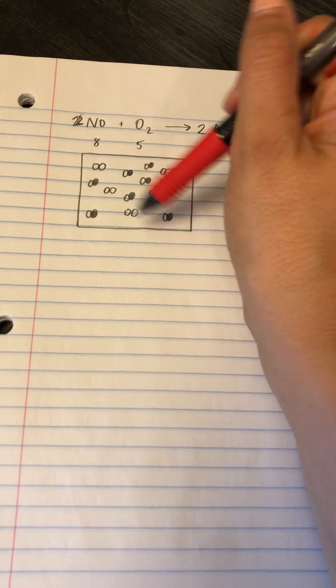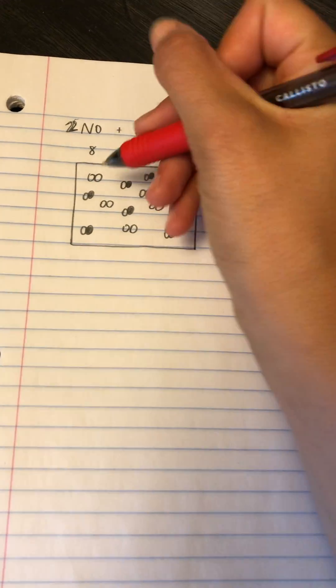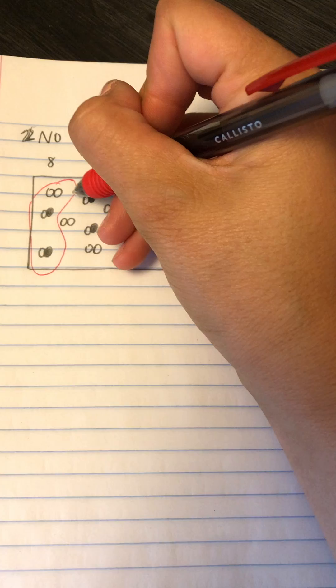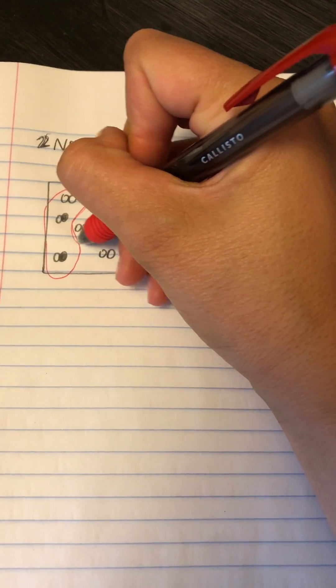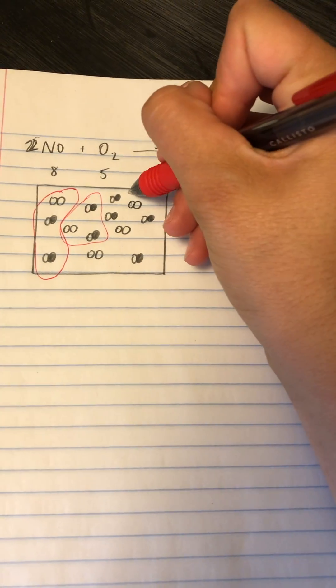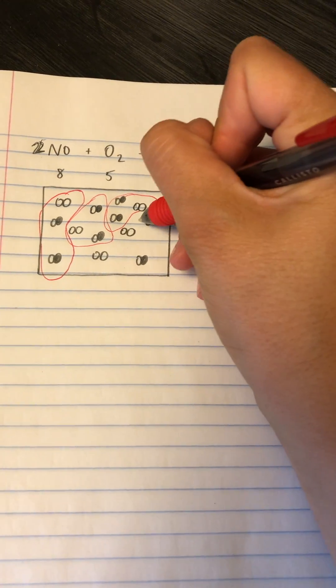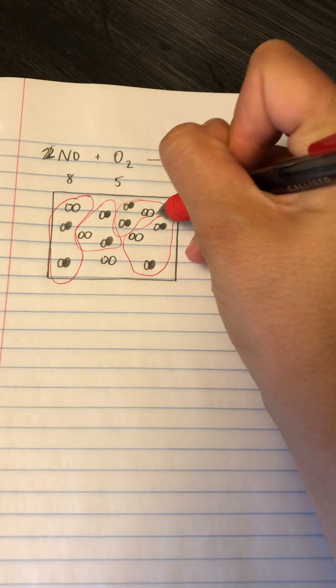But because your ratio is not one-to-one, you need to actually look at the particle diagram. So two NOs and one O2, we have two NOs and one O2, we have two NOs, one O2, and two NOs and one O2.